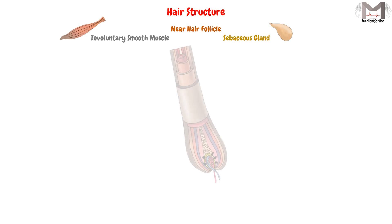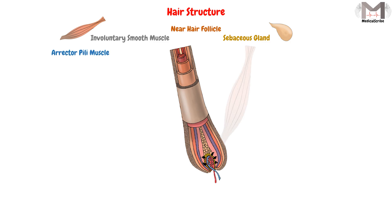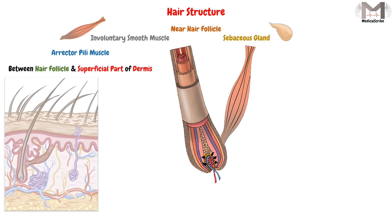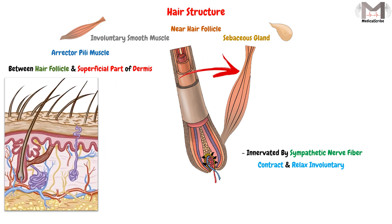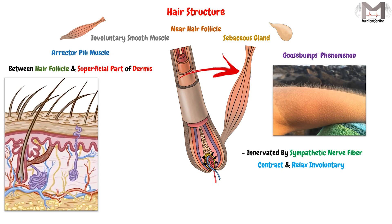Near the hair follicle, we have an involuntary smooth muscle and a sebaceous gland. This smooth muscle, called the erector pili muscle, connects the hair follicle to the superficial part of the dermis and is innervated by sympathetic nerve fibers. When it contracts, it pulls the hair to a more vertical direction, causing it to erect and producing the goose bump phenomenon — the dimpling of the skin surface that occurs when we feel cold or face a scary situation.